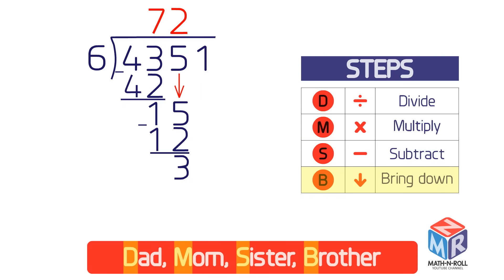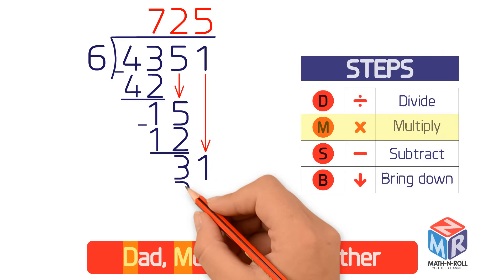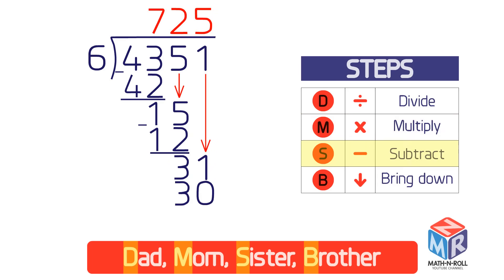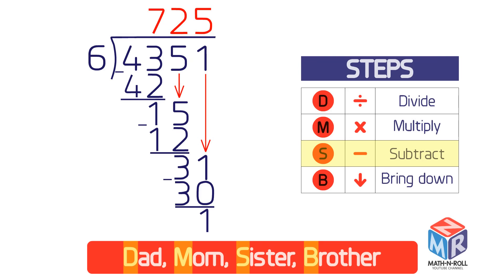Bring down the next number, 1, to make the new number 31. Another cycle is complete. Ask how many times 6 goes into 31 — that is, what's 31 divided by 6? The answer is 5 with a remainder, so write 5 above the 1. Multiply 6 by 5 to get 30 and write the product under 31. Subtract 30 from 31 to get 1. You have no more numbers to bring down, so 1 is the remainder. The answer is 725 with a remainder of 1.